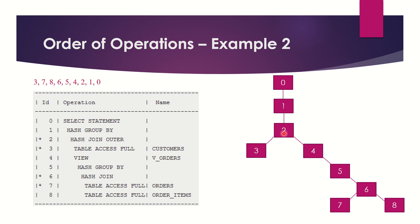After 3, operation 2 has to execute because 3 is the child and once a child executes its parent must execute. But in order to execute 2, operation 4 must also execute, because a parent cannot execute without its child. Similarly, without 5, operation 4 cannot execute; without 6, operation 5 cannot execute. So to execute 2, we must go down the child path to operation 6, which has two children — 7 and 8. The one on the left executes first, so the 7th operation executes second. After 7th, the 8th will execute, then 6, then 5, then 4, then 2. Once 2 is executed, 1 will execute and then 0.